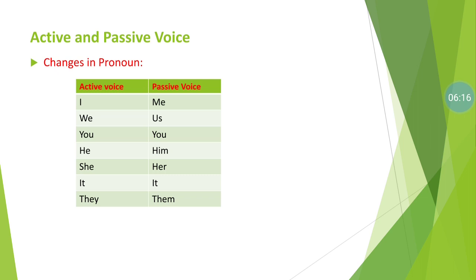Now let's see the changes in pronouns when transferring from active to passive or passive to active. The pronoun changes are: I → me, we → us, you → you, he → him, she → her, it → it, they → them. These are the personal pronoun changes while transferring sentences.